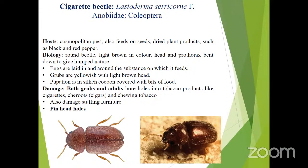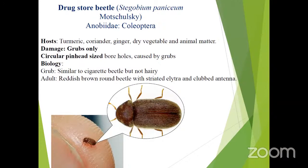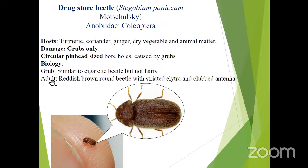Coming to cigarette beetle, Lasioderma serricorne, family Anobiidae. Both grubs and adults are damaging stages. The typical symptom for this insect — and also for drugstore beetle — is pinhead holes, also circular in shape. Coming to drugstore beetle, Stegobium paniceum, also belonging to Anobiidae. The grub is the damaging stage, and you have to remember circular pinhead-sized borer holes on stored products.